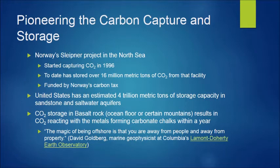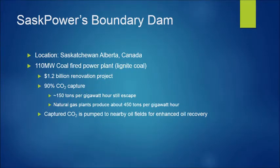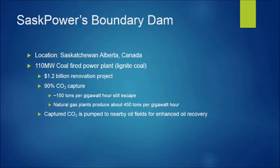SaskPower's Boundary Dam refit became active in 2014. It is located in Saskatchewan, Canada. Boundary Dam is the first post-combustion coal-fired power plant to use carbon capture and storage. Along with capturing 90% of CO2 emissions, it is expected to capture 100% of SO2 emissions, which it will convert into sulfuric acid for sale to industry, along with fly ash, which it will sell to be mixed with cement. Boundary Dam is a 110-megawatt plant that cost about 1.2 billion dollars to renovate and refit with CCS technology. With lessons learned on this project, future projects are expected to have costs reduced by 20 to 30%. The CO2 captured at this facility will be used in enhanced oil recovery projects within the region.